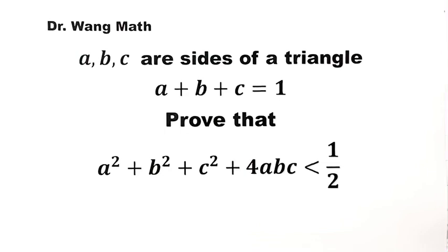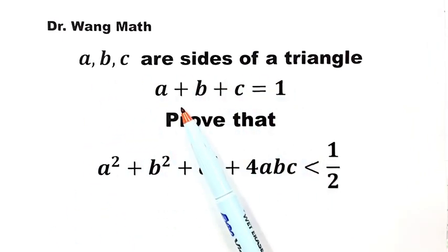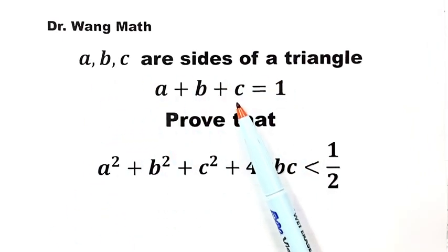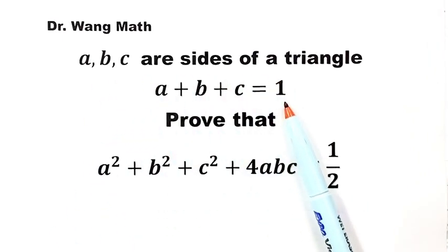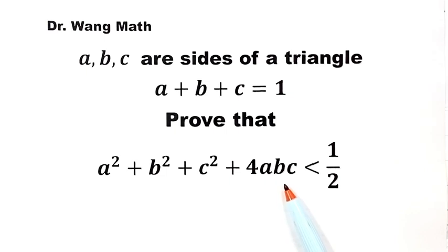In this video, we can solve this question from the USSR Maths Olympiad. ABC are sides of a triangle, and A plus B plus C equals 1. Prove that A squared plus B squared plus C squared plus 4ABC is less than one half.